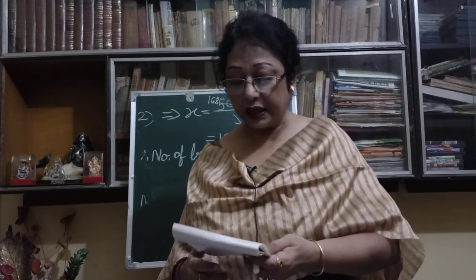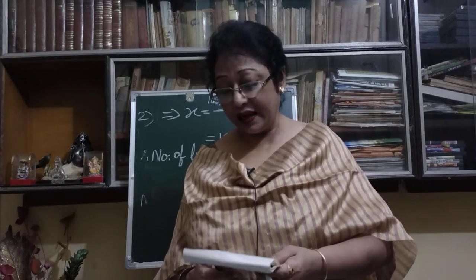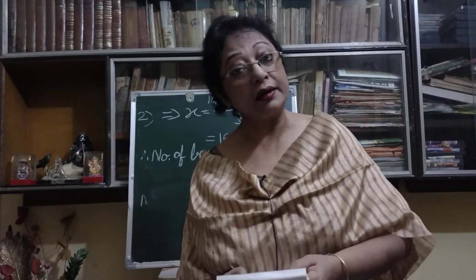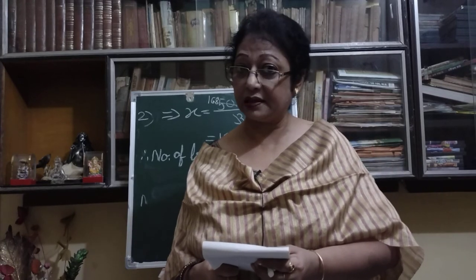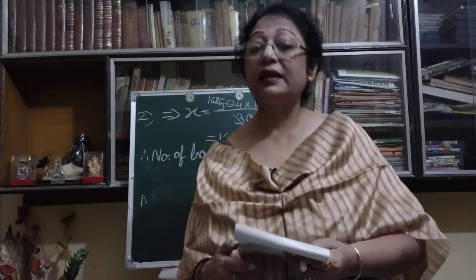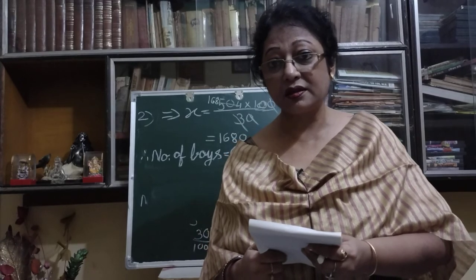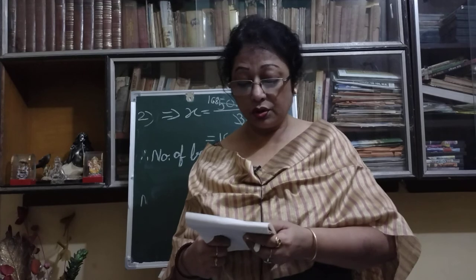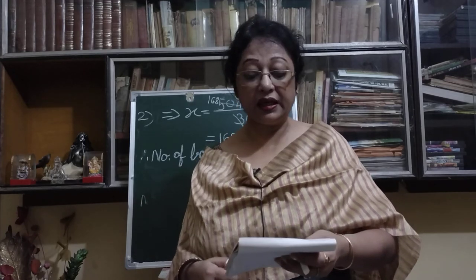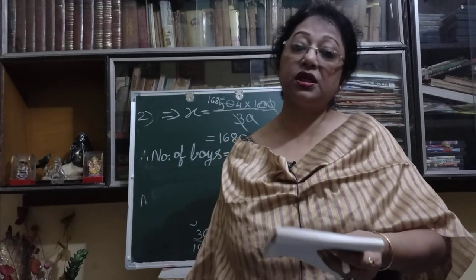Since he sold 40%, the percentage he still has is 100 − 40 = 60%. So 60% of x = 420. This way you can solve and find the answer — the original number of apples.